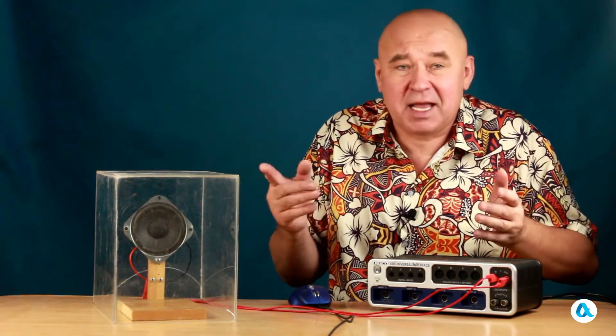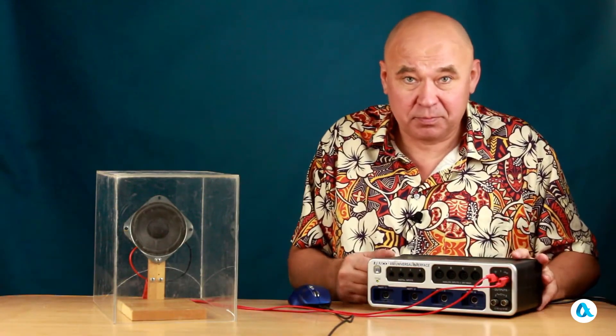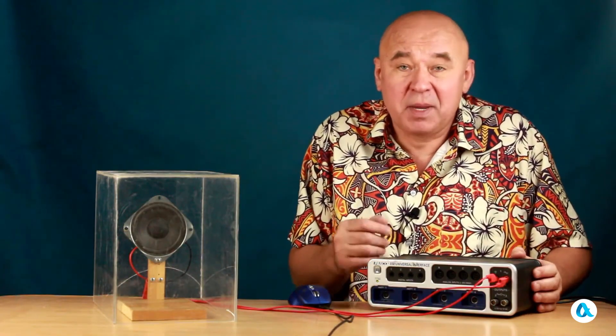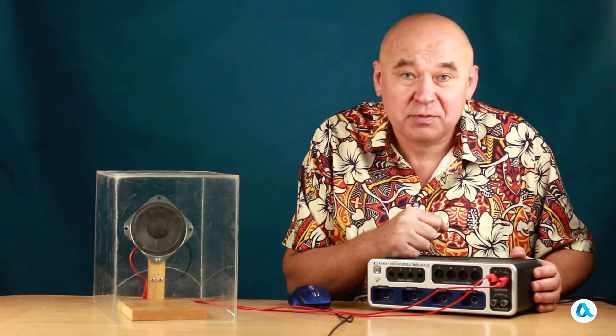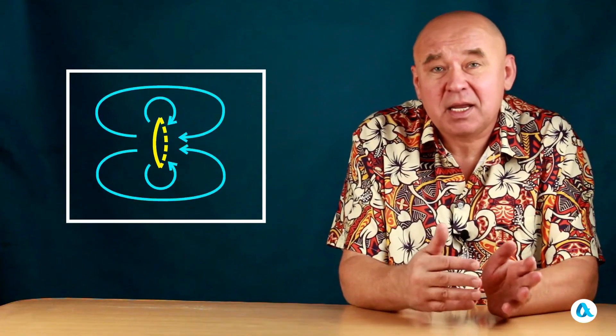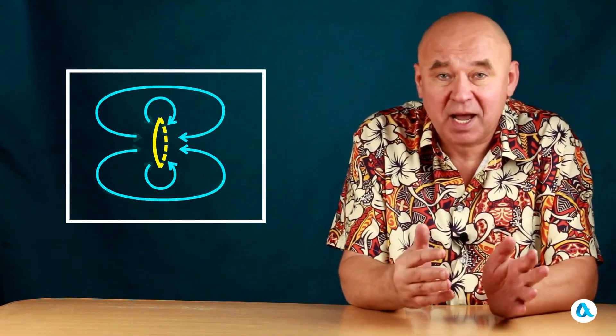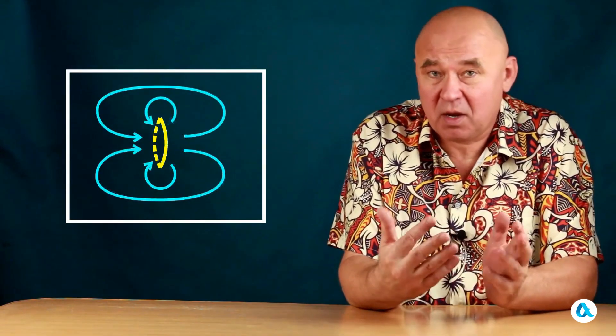Or how can a standing wave fit in there? This question leaves us somewhat puzzled, and it needs to be resolved. So what is happening inside the box? The speaker diaphragm moves back and forth, and this movement of the diaphragm creates swirling air currents inside the box, which also move back and forth.